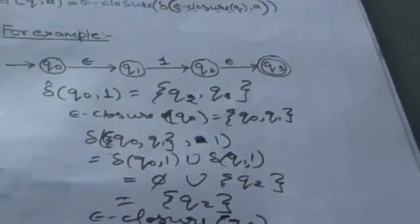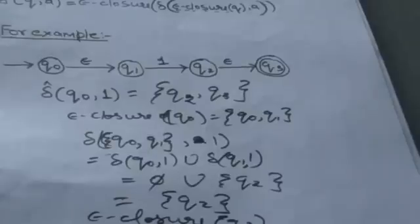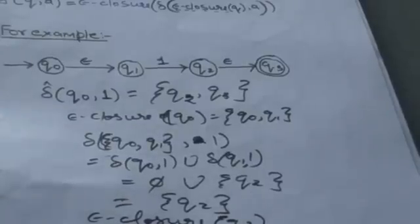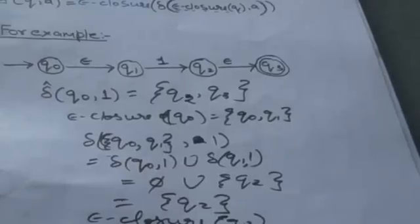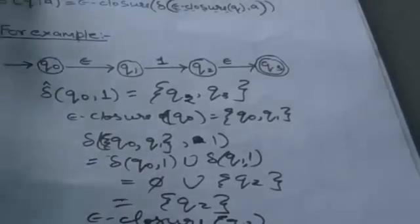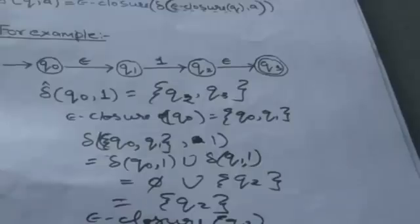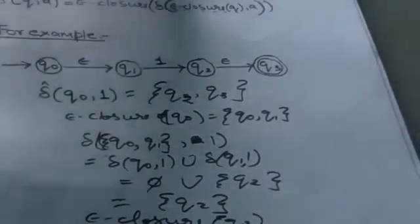So for a single input symbol, the extended transition function behaves differently from the normal transition function — which is not the case for NFA without empty moves and DFA. Now our main purpose is to find the transition for a string of input symbols, which is the main purpose of the extended transition function. Let's see this with an example.